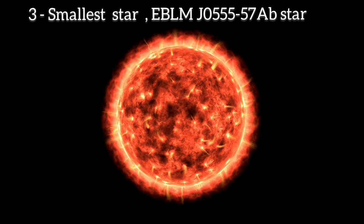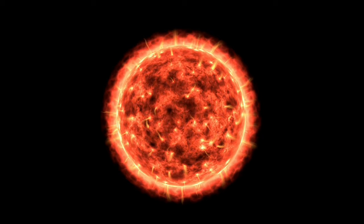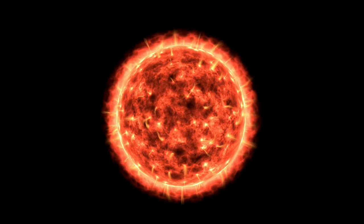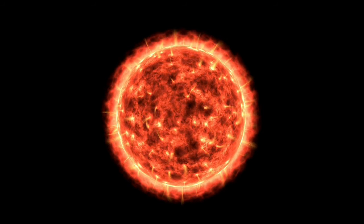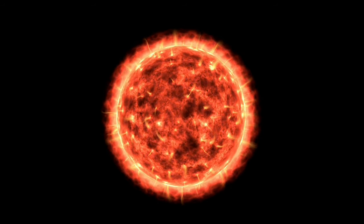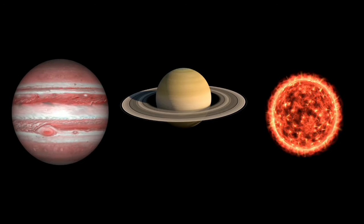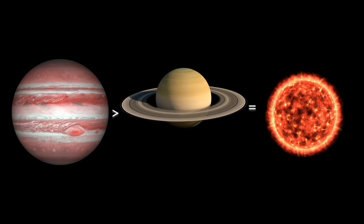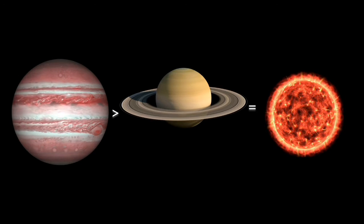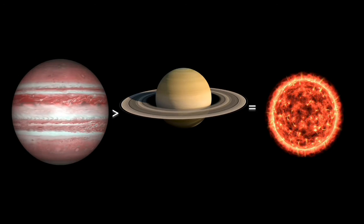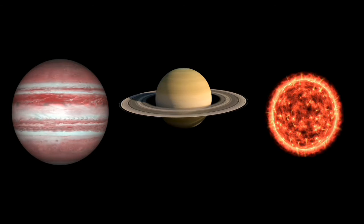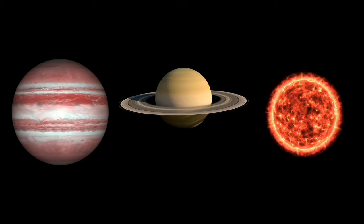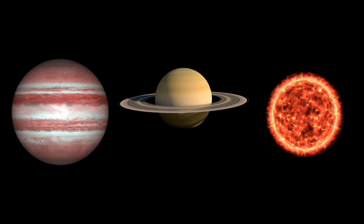EBLM J0555-57 AB is the smallest known star, located 600 light-years away from Earth in a triple star system in the Pictor constellation. This tiny star has a diameter of 59,000 kilometers, which is even smaller than the size of the planet Jupiter. It is almost the size of Saturn but has sufficient mass, which is 250 times that of Saturn, to enable the fusion of hydrogen in its core.